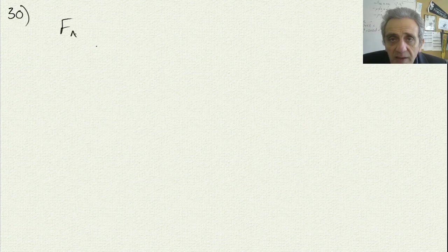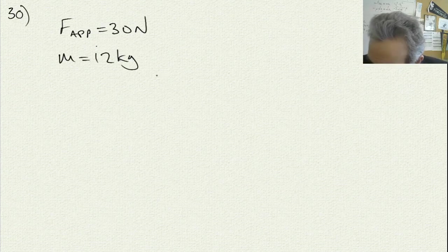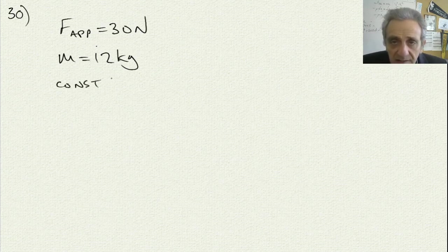The first question is number 30. It says: if you use a horizontal force of 30 newtons to slide a 12 kilogram wooden crate across a floor at a constant velocity, what is the coefficient of kinetic friction between the crate and the floor? So what are we given? We're given that we have an applied force of 30 newtons, and the mass is equal to 12 kilograms.